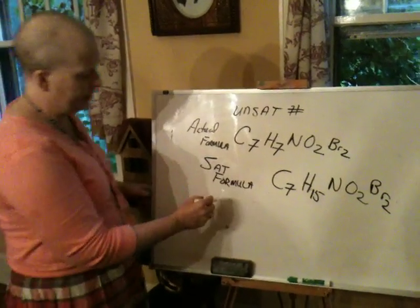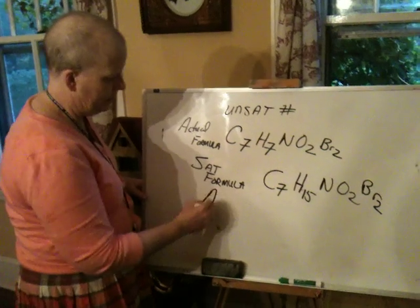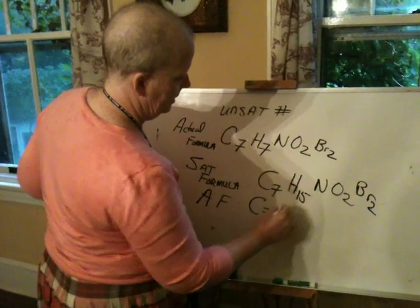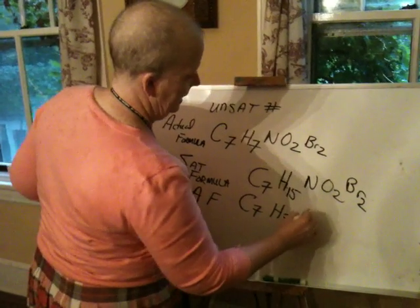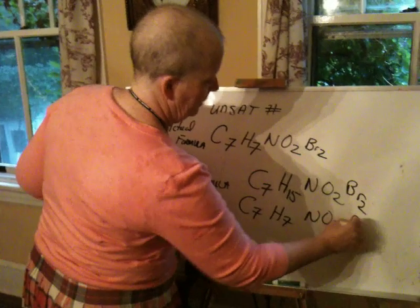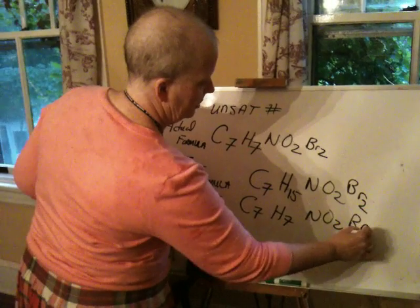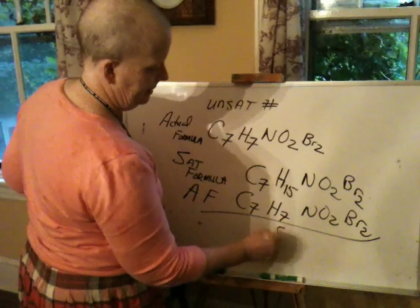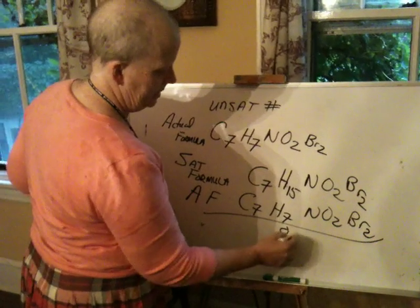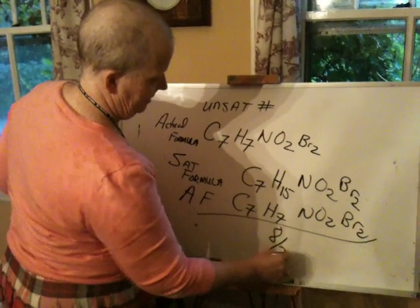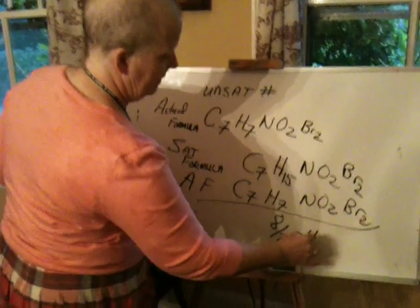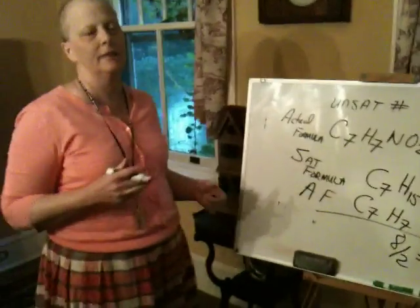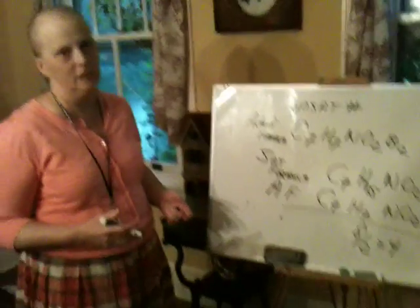So it's 16, then 17, then 15. Now I want to subtract the actual formula — C7H7NO2Br2. The difference is 8, and dividing by 2 gives an unsaturation number of 4, which is actually a pretty common unsaturation number.